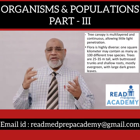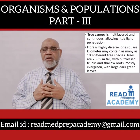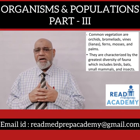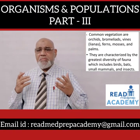Precipitation is evenly distributed throughout the year with annual rainfall exceeding 2,000 mm. Soil is nutrient poor and acidic. Decomposition is rapid and soils are subject to heavy leaching. Tree canopy is multi-layered and continuous, allowing little light penetration. Flora is highly diverse — one square kilometer may contain as many as 100 different tree species. Trees are 25 to 35 meters tall with buttressed trunks and shallow roots, mostly evergreen with large dark green leaves.